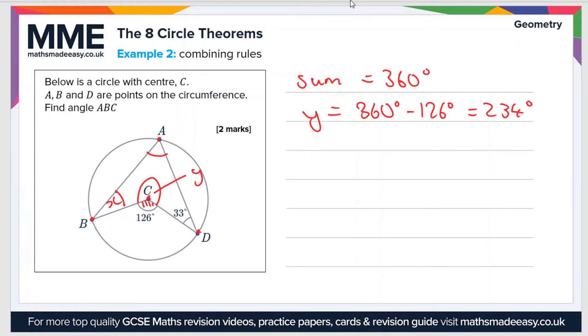And next we can use one of our circle theorems. So this angle here at the circumference will be half the angle here at the center, because these two lines here are two radii. So this angle BAD on the edge is 126 divided by 2.